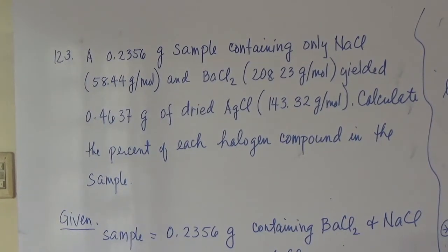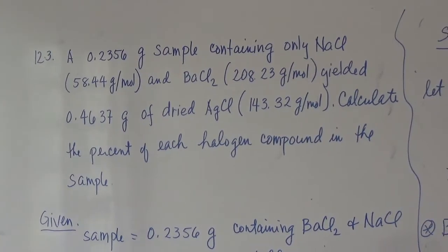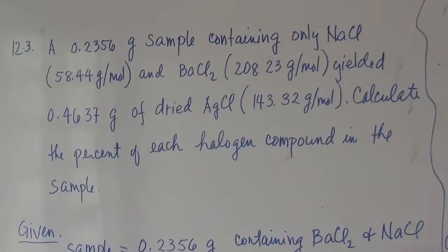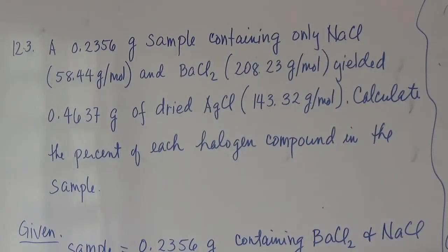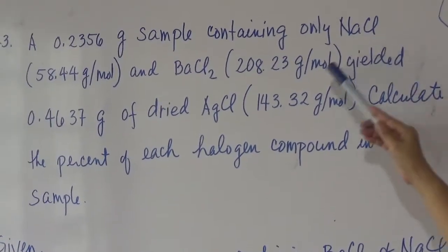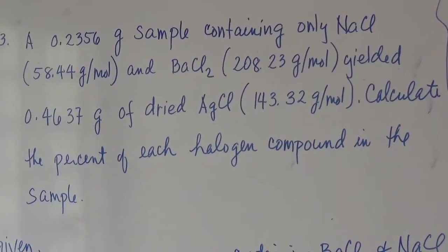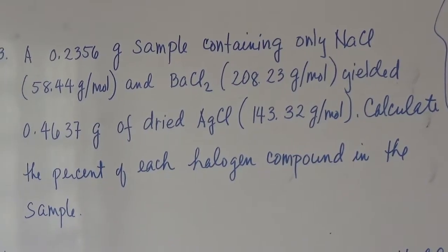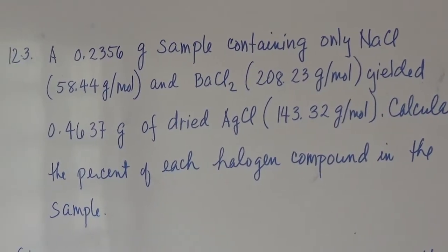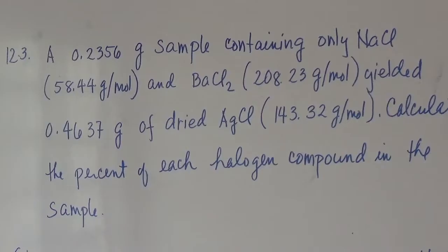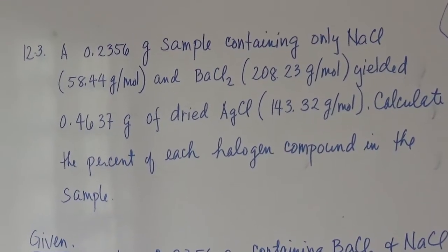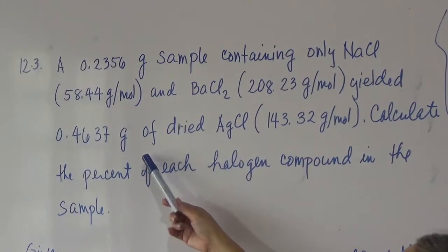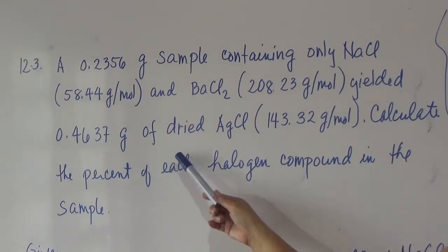Problem 12.3. We have a sample of 0.2356 grams which is composed of sodium chloride and barium chloride — meaning the sample is a mixture of sodium chloride and barium chloride. A precipitant is added to the sample and it produces a precipitate, which is barium sulfate. The precipitate is dried and found to have a mass of 0.4637 grams.